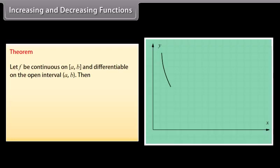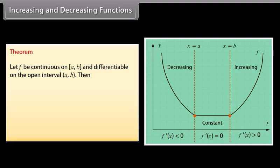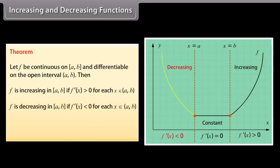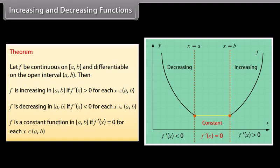Theorem: Let f be continuous on a closed interval [a, b] and differentiable on the open interval (a, b). Then f is increasing in [a, b] if f dash x is greater than 0 for all x in (a, b). f is decreasing in [a, b] if f dash of x is less than 0 for each x in (a, b). f is a constant function in [a, b] if f dash of x equals 0 for each x in (a, b).